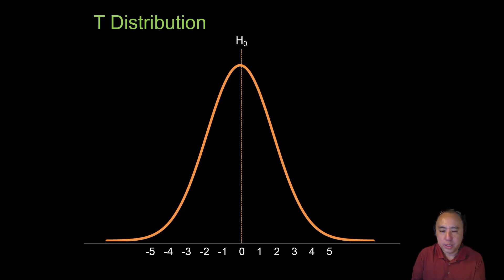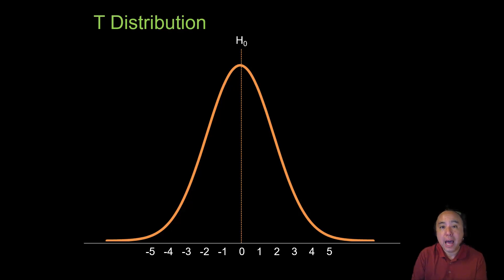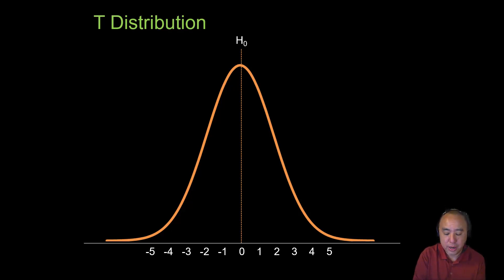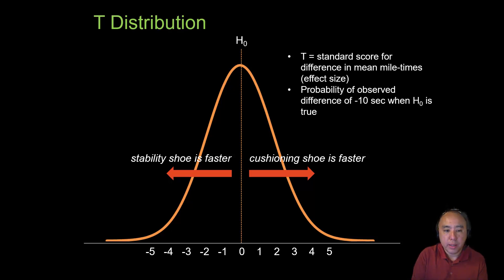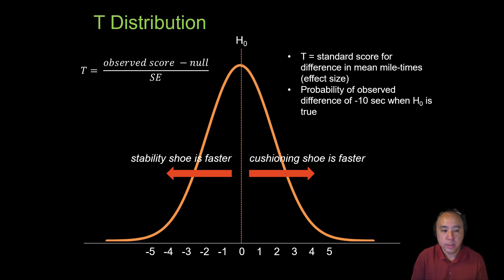To obtain the p-value, software such as SPSS, R, or SAS will provide it automatically. But it's helpful to understand how it's derived. The t-distribution is essentially the same curve resembling a normal distribution, but standardized by the standard error. A negative t-score means the stability shoe is faster; a positive score means the cushioning shoe is faster.